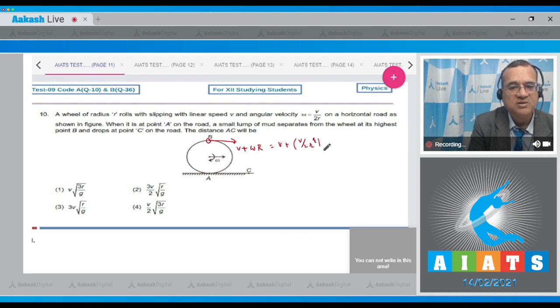Now this becomes a projectile instantaneously as it gets separated. So this is horizontal projectile and the range equals horizontal velocity times time of flight. Time of flight formula is 3v/2 times √(2h/g). What is h in this case? This height which equals 2r.